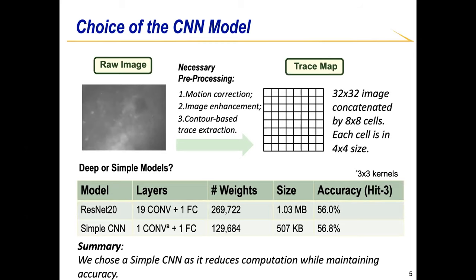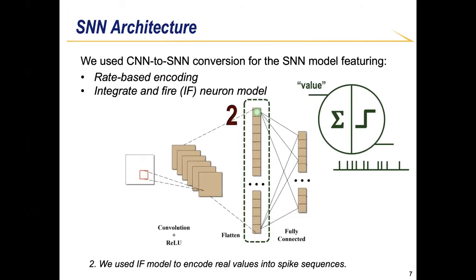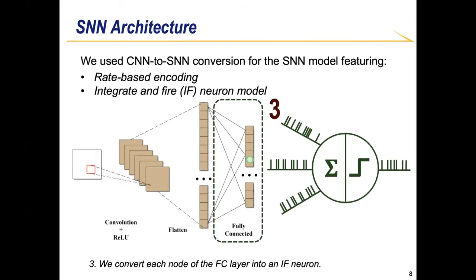Our CNN model design is simple — just one convolutional layer and one fully connected layer — yet competitive in accuracy with significantly deeper models such as ResNet-20, despite having less than half the size and number of weights. We also introduce an SNN-based model using CNN-to-SNN conversion, which allows us to utilize highly optimized deep learning toolkits and backpropagation while exploiting energy efficiency benefits of SNNs. The SNN converts activations into spiking neurons using the integrate-and-fire model, with spike-based computation for the fully connected layer.